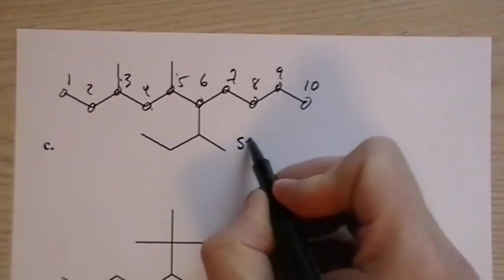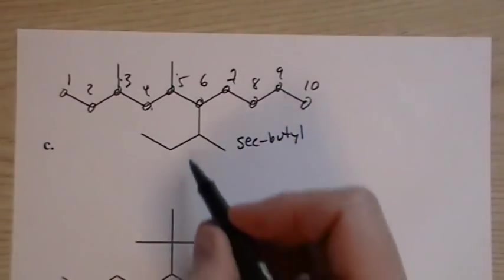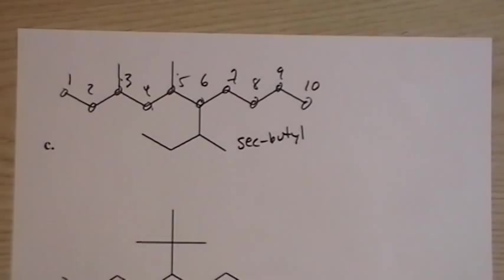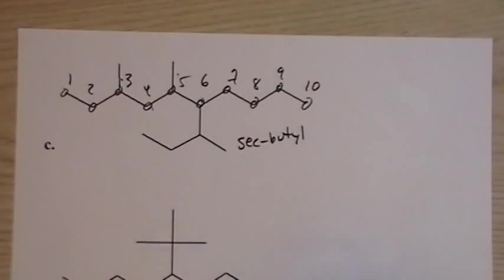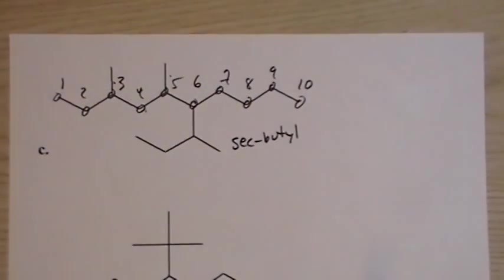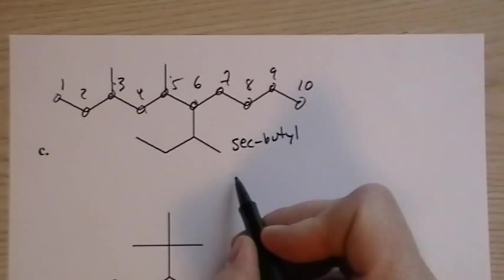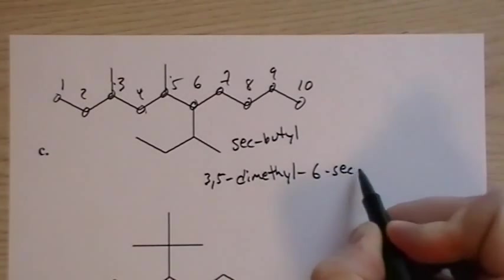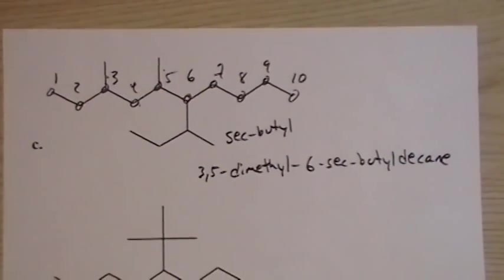This is a methyl, methyl, and now this is our sec-butyl group here. It's usually in this form in the line angle drawing, but this arm could be down. Just be careful to see that it's three carbons—it's like a propyl group that we put an extra methyl group on that first carbon off the chain. A lot of this is just repetition. Learn, do as many as you can, and learn the rules that way. Get them forced deep down into your skull by doing as many as you can. So we have the sec-butyl—that s comes last—so we have 3,5-dimethyl-6-sec-butyl decane.